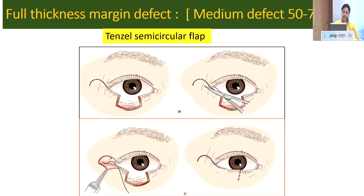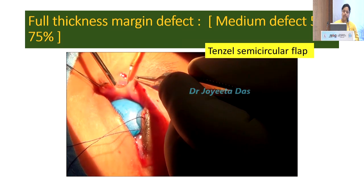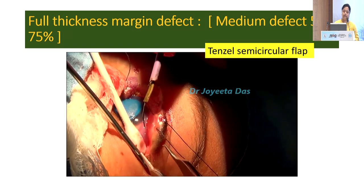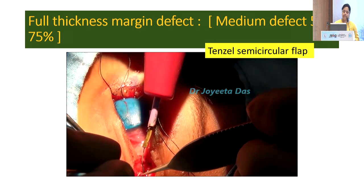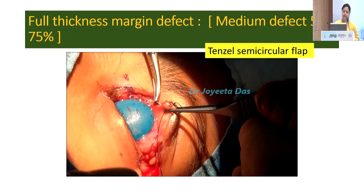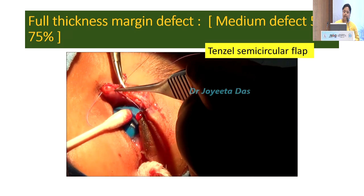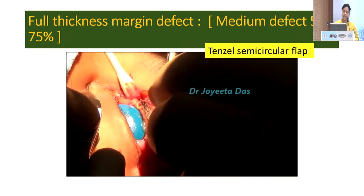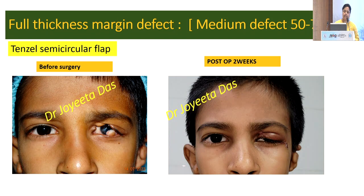For the medium-sized defect, the Tenzel semicircular flap is the option. This is a short video of the procedure. This is a case of Goldenhar syndrome, and a wedge-sized flap has been prepared. Next, lateral canthoplasty is done — the lateral canthus upper arm is cut, and then a small semicircular myocutaneous flap has been dissected. The suture is the same as the direct closure vertical mattress suture. Finally, the lateral canthoplasty and the muscular flap are sutured with even interrupted sutures. This is the two-week post-op follow-up.